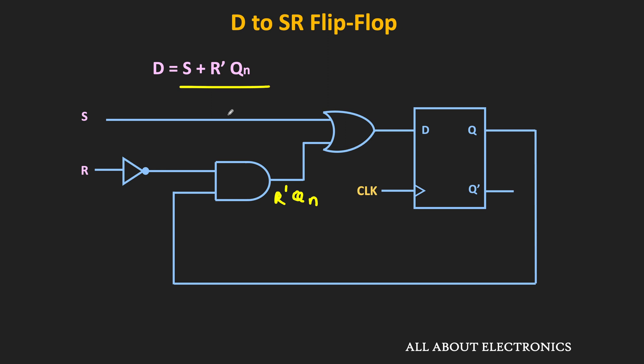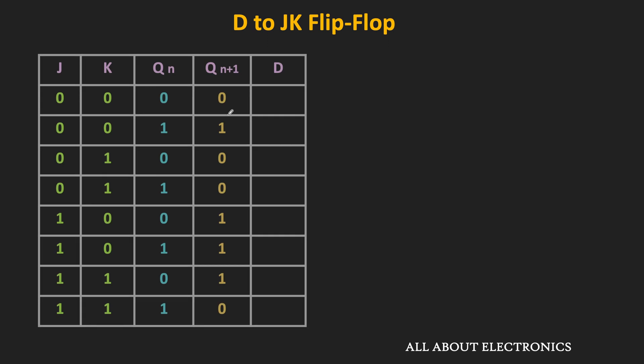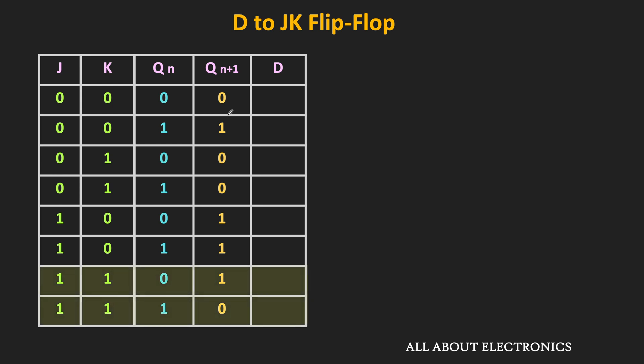Similarly, now let us see how to convert the D flip-flop into the JK flip-flop. Since the JK flip-flop is our required flip-flop, first of all let us write down its truth table. For the JK flip-flop, when both inputs are 0, it will retain its current state. When J is 0 and K is 1, the flip-flop will get reset to 0. When J is 1 and K is 0, the flip-flop will get set to 1. And when both J and K inputs are 1, the output will toggle — if Qn is 0 it becomes 1, and if Qn is 1 it becomes 0.